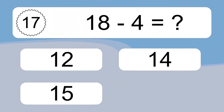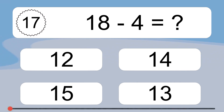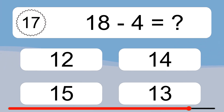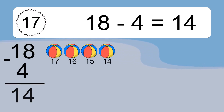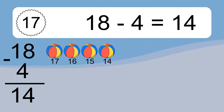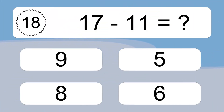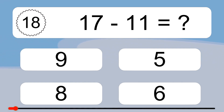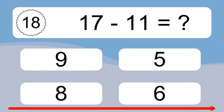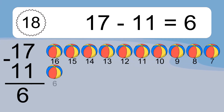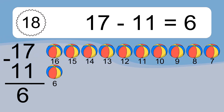18 minus 4 equals what? 17 minus 11 equals 6. Let's count it! 16, 15, 14, 13, 12, 11, 10, 9, 8, 7, 6.